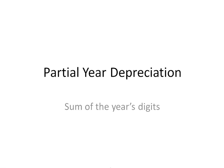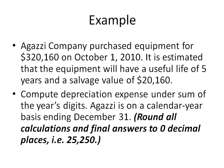This is a short example on partial year depreciation using the sum of the years' digits. This particular company bought equipment for $320,160 on October 1st. It's estimated to have a useful life of five years and a salvage value of $20,160. We're going to compute depreciation for the five years based on the sum of the years' digits.